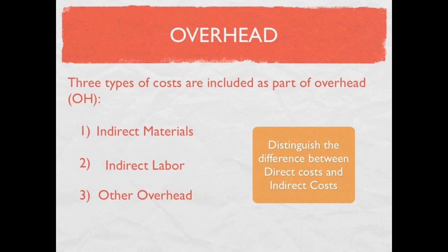There are three types of costs included as part of overhead. For example, if we're producing wooden chairs, the wood would be a direct material. An indirect material might be glue — a small amount used to hold things together. For labor, the people hands-on putting the chair together is direct labor. An example of indirect labor would be the custodian in the plant. The key word is 'plant.' Other overhead includes things like utilities for the plant or depreciation on plant equipment.